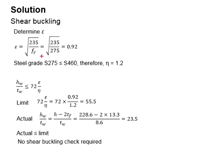As the steel grade is 275, which is less than 460, the eta is taken as 1.2.